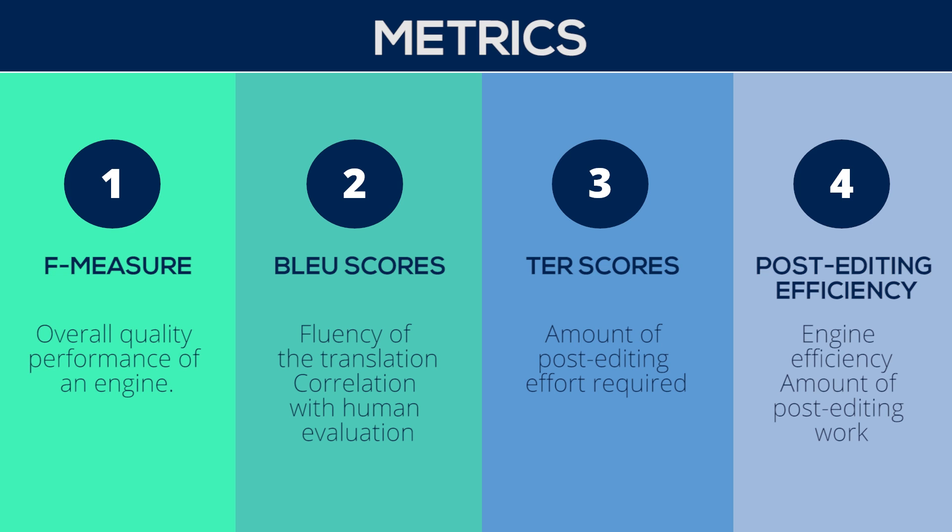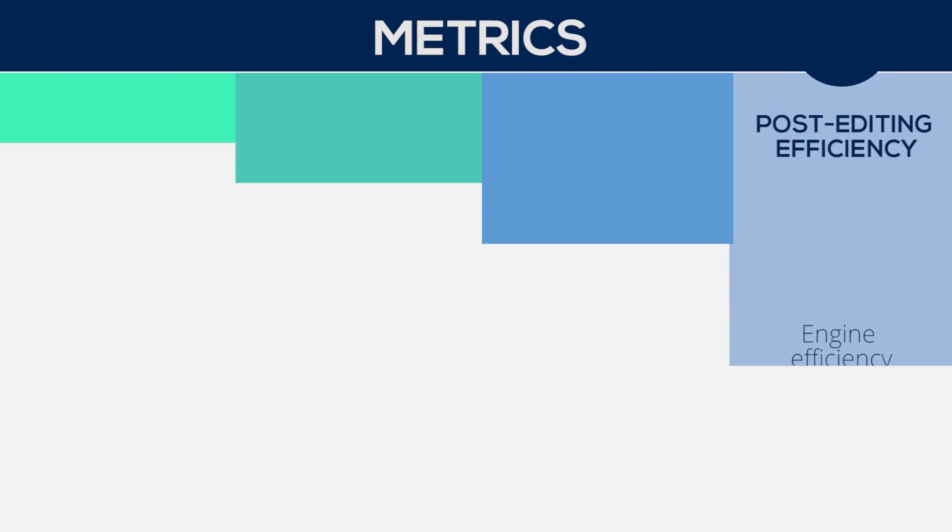Our general measurement is 1,000 or more words per hour, which indicates an acceptable MT engine. These metrics help evaluate the suitability of machine translation to your content by analysing the efficiency of the engine and the quality of the output.